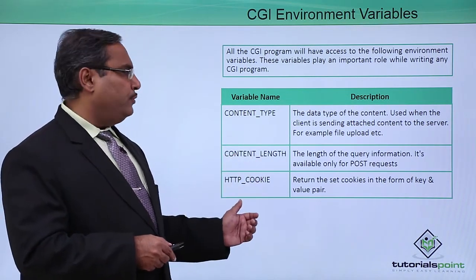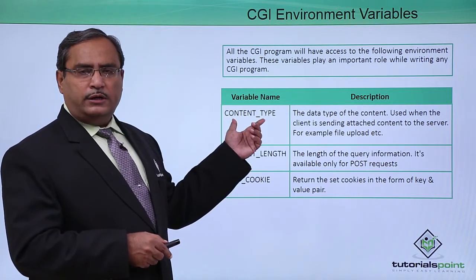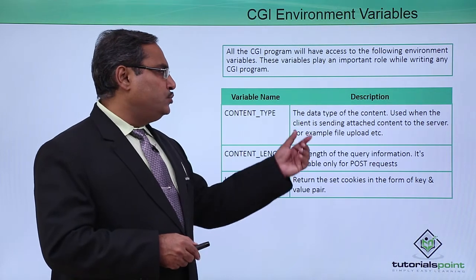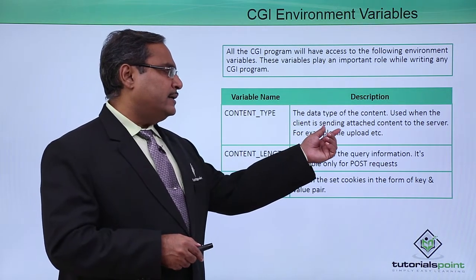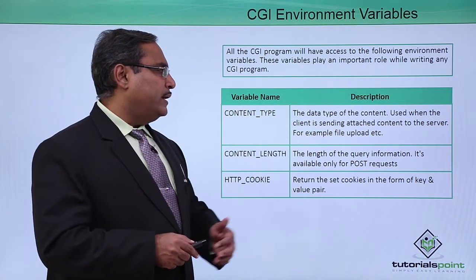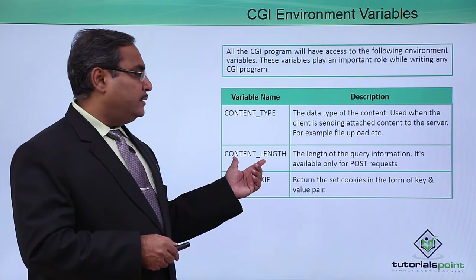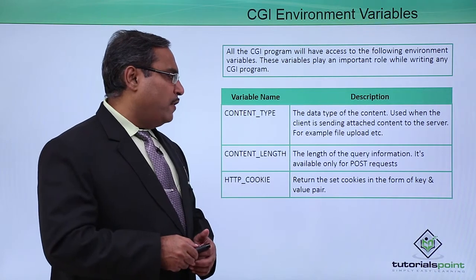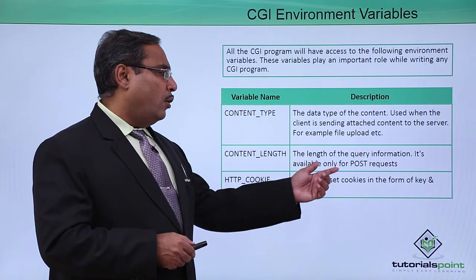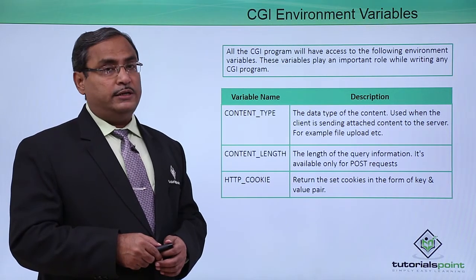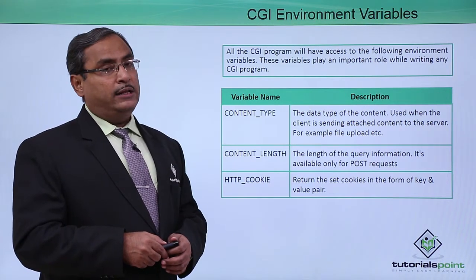Here is the variable list. The first one is CONTENT_TYPE - the data type of the content used when the client is sending attached content to the server, for example file upload, etc. Next one is CONTENT_LENGTH - the length of the query information, available only for POST requests. We know that there are two types of requests: POST and GET.